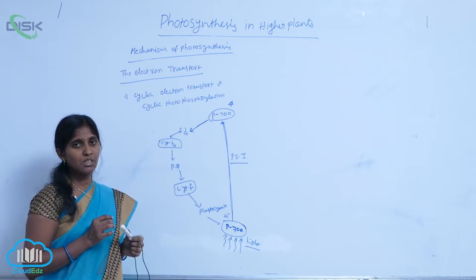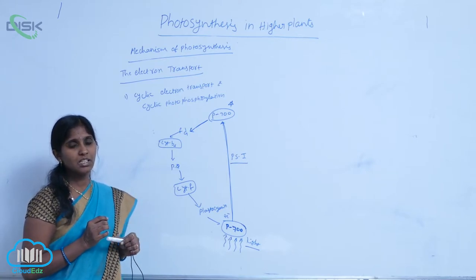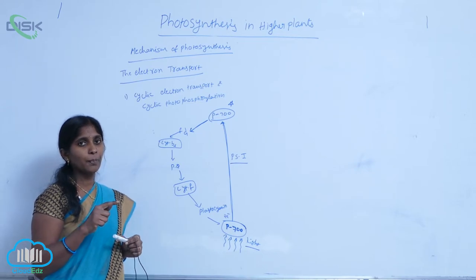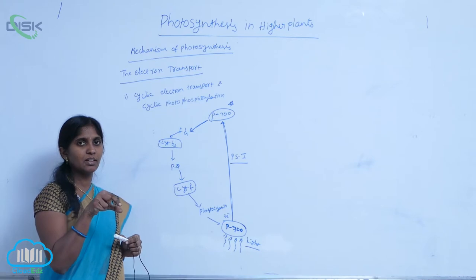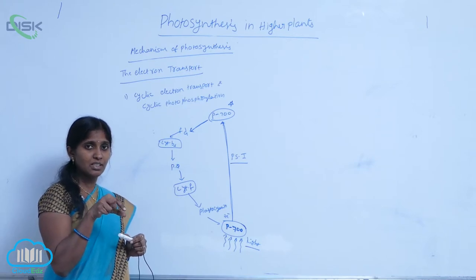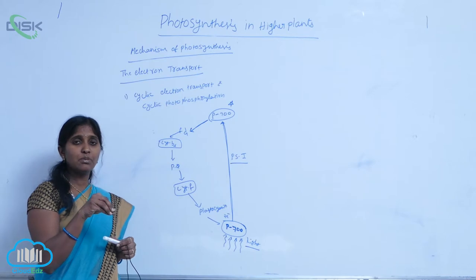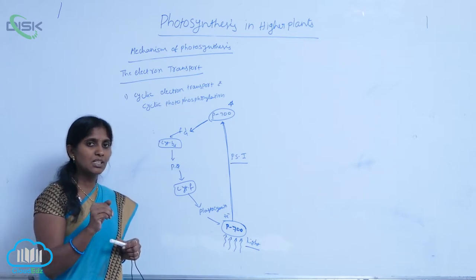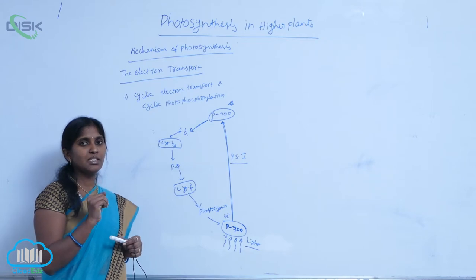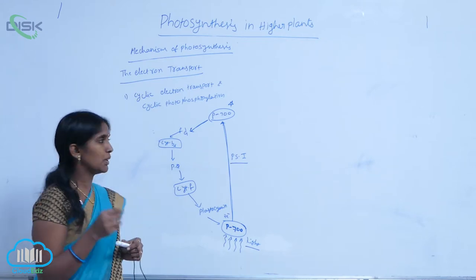In ferredoxin, the central metal position that would contain Mg²⁺ in chlorophyll instead contains H⁺ ions, which is why it's colorless. Therefore, ferredoxin is considered a colorless pigment.